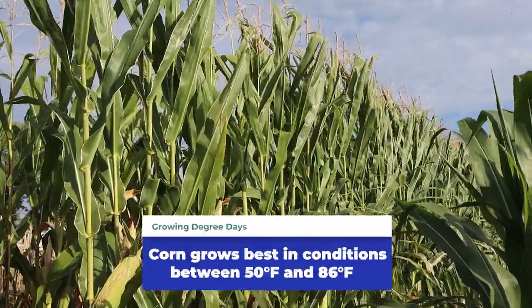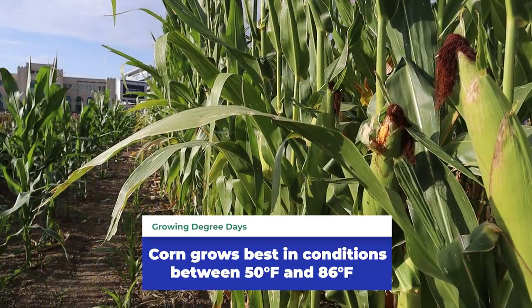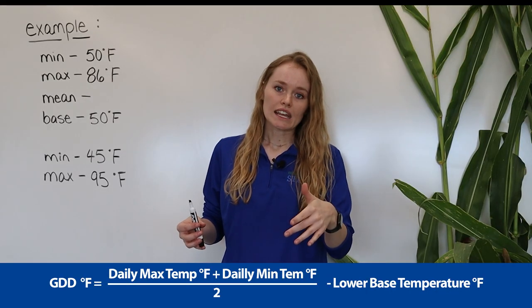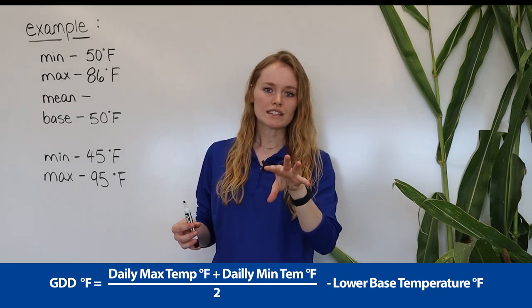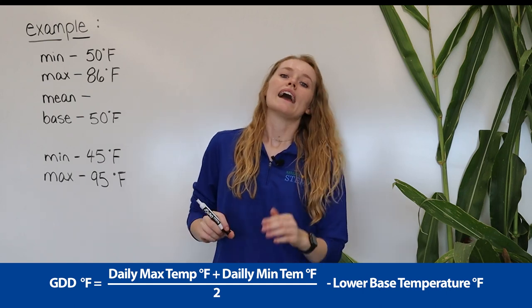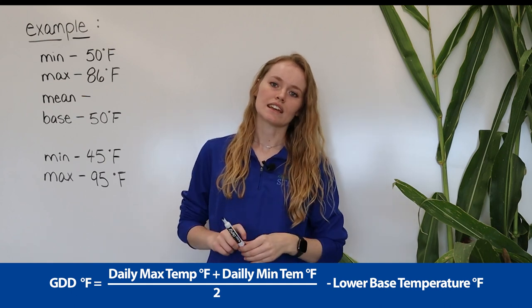Every day, corn experiences different temperatures. The temperature needs to be at least 50°F for corn to grow, and if it goes beyond 86°F, corn won't grow any faster than it already is. When calculating growing degree days, we take the average temperature for that day and subtract the base temperature of 50°F to get the degree units accumulated. Over time, we add up those units every day.